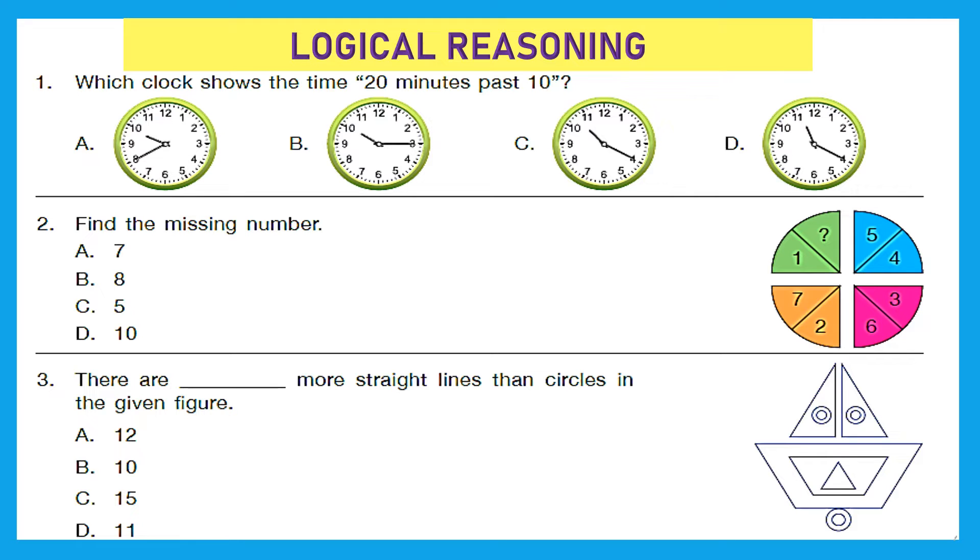Question 1. Which clock shows the time 20 minutes past 10? Let's see. A, it is not yet 10 o'clock. B, it is 10 o'clock plus 15 minutes. C, it is 20 minutes past 10 o'clock. So C is the right answer.